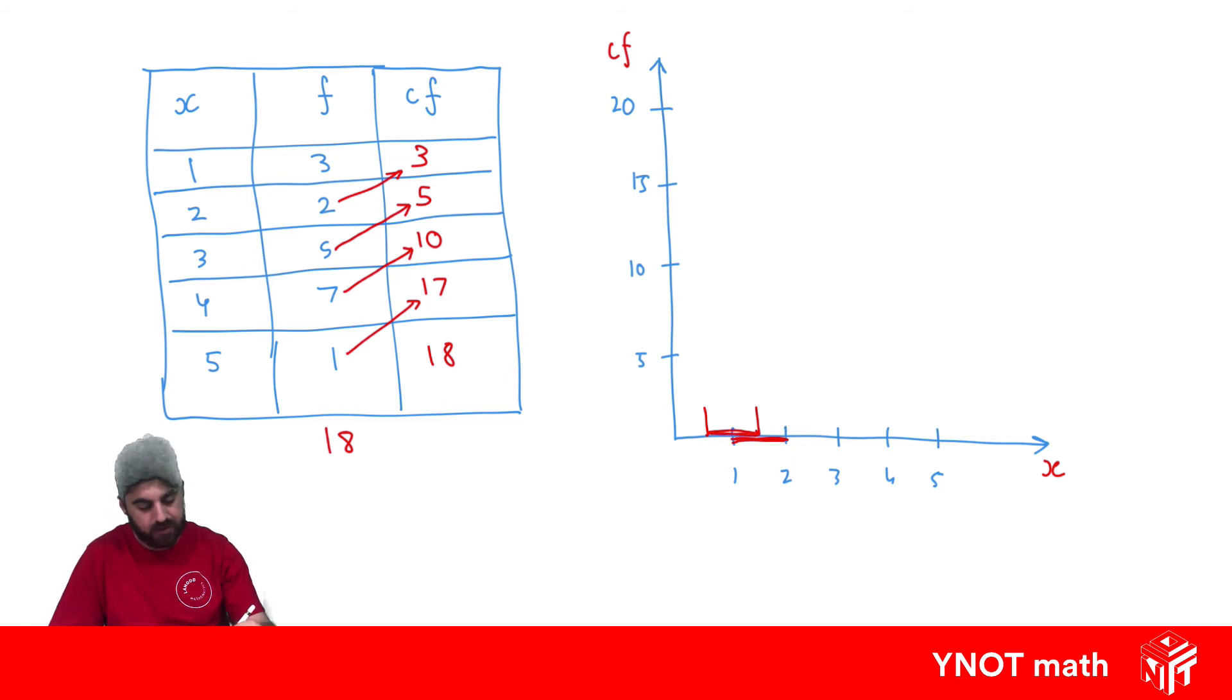So our first one goes up to 3, so that might be about up to there. So for 2, our cumulative frequency is 5, so that definitely is in line there with 5. And our cumulative frequency histogram, all the columns are connected.